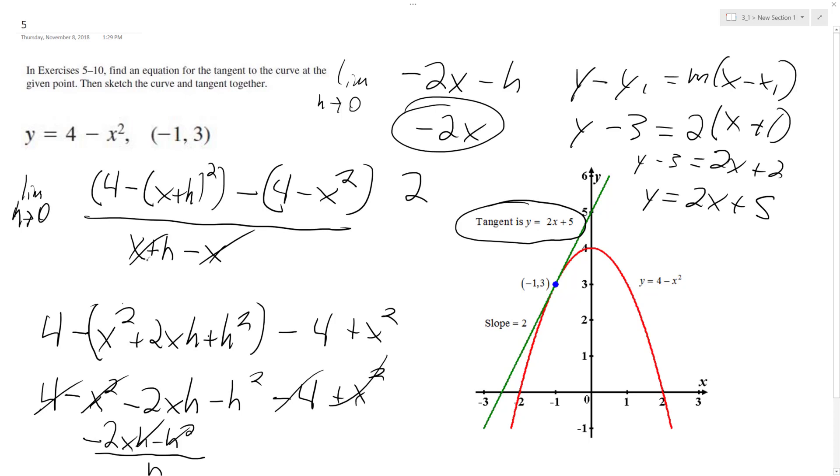All right, so what happened here is I derived the tangent. I found the limit as h approaches 0. I canceled all terms and canceled out h in the denominator.